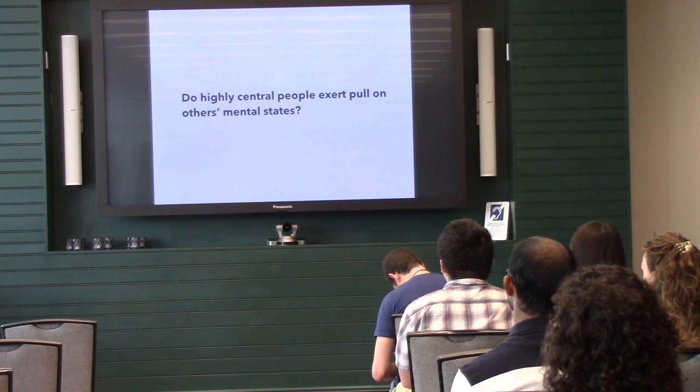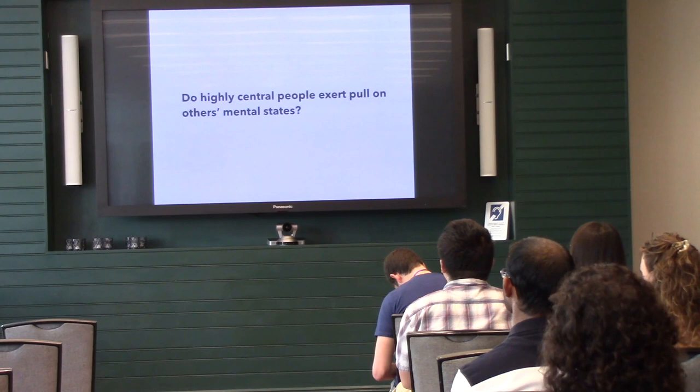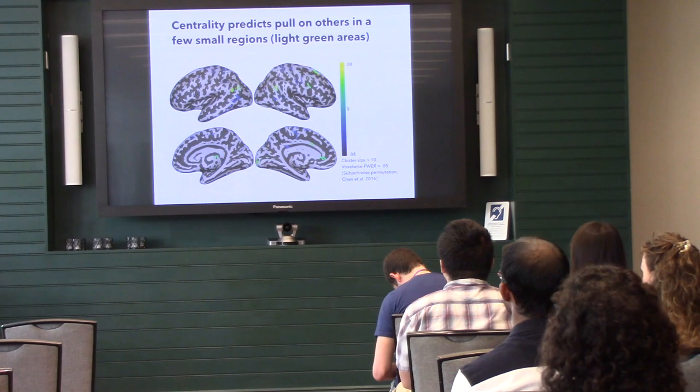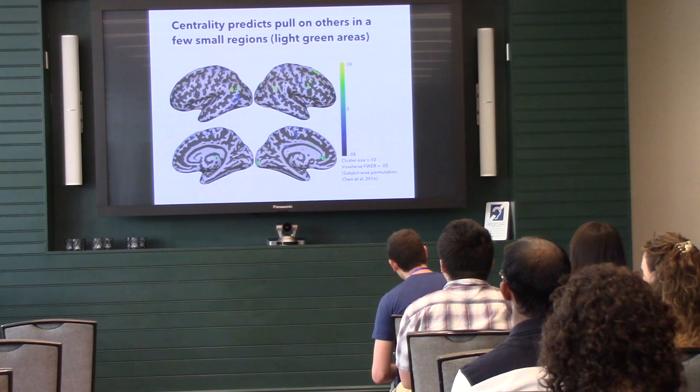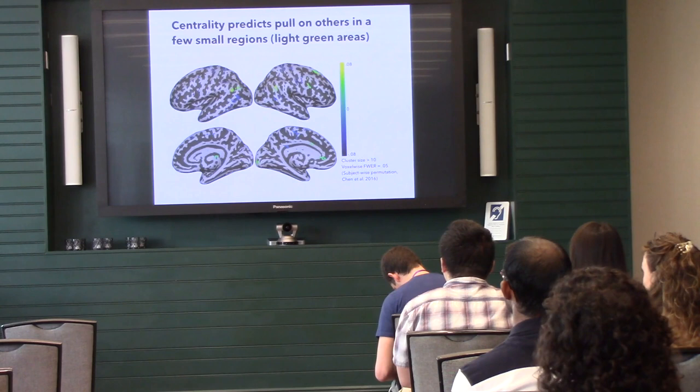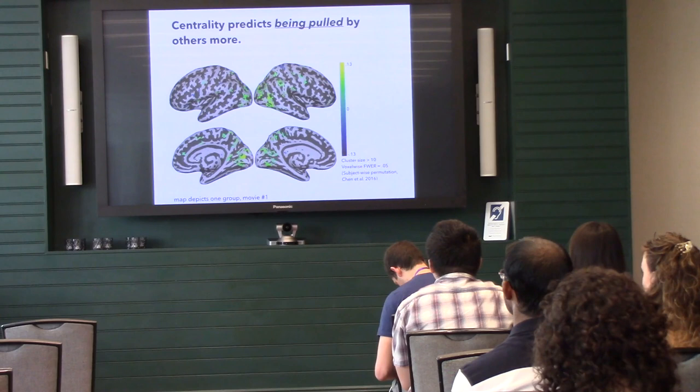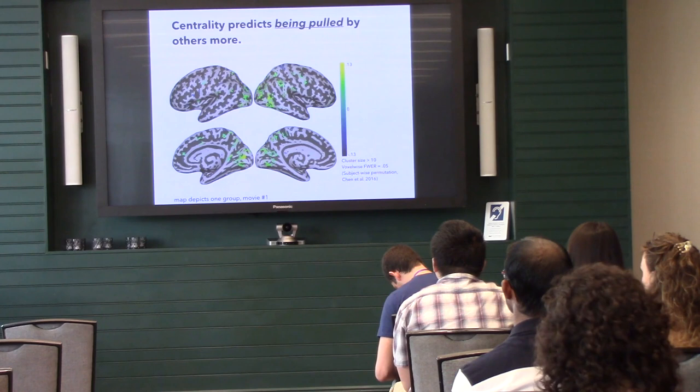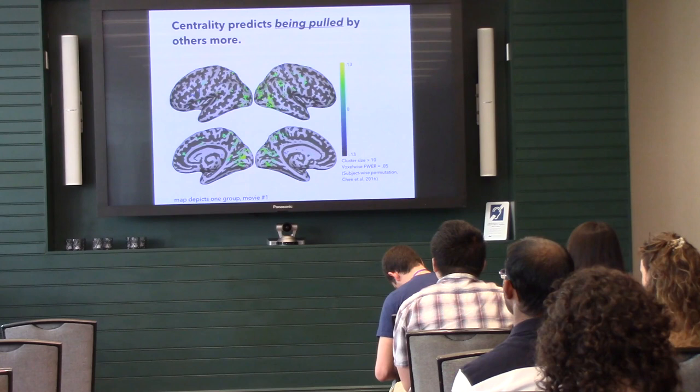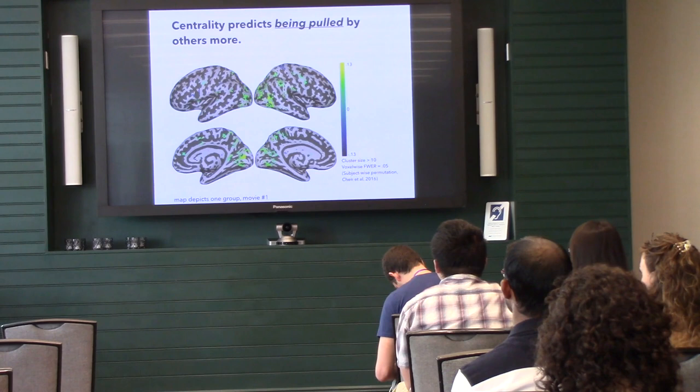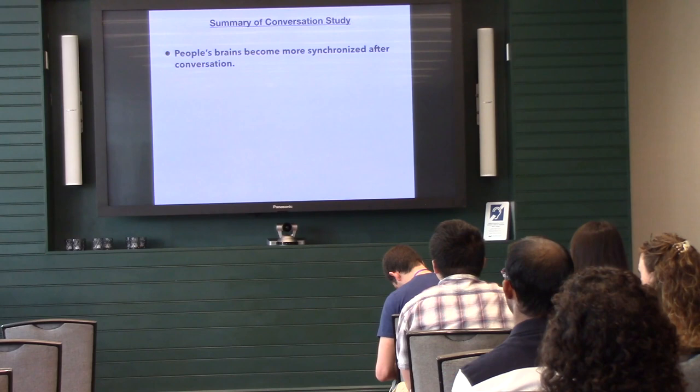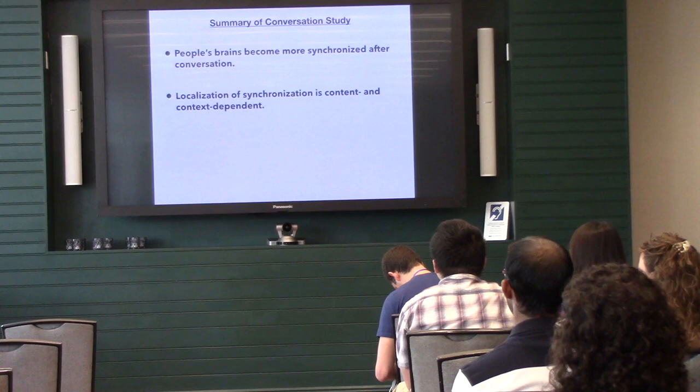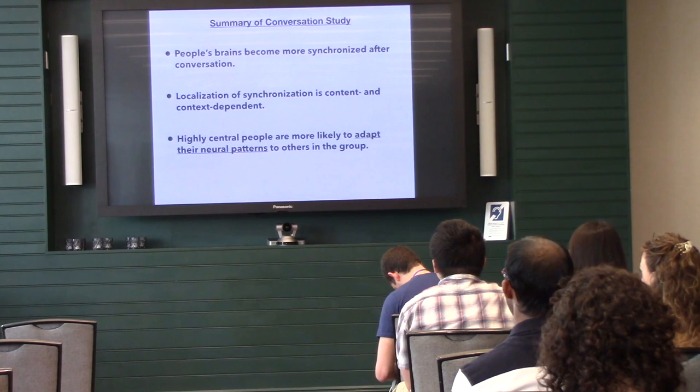So in summary of this study, people's brains become more synchronized after conversation. Importantly, that localization of synchrony is context and content dependent. And highly central people are more likely to adapt their neural patterns to others in the group. Now importantly, the caveat here is our task was about building consensus and it was low stakes. So you can imagine if you're a highly central person, why would you waste your social capital trying to dig your heels in and make people move to you? This is a low stakes task. The goal is consensus. So why not just go with the best idea out there?